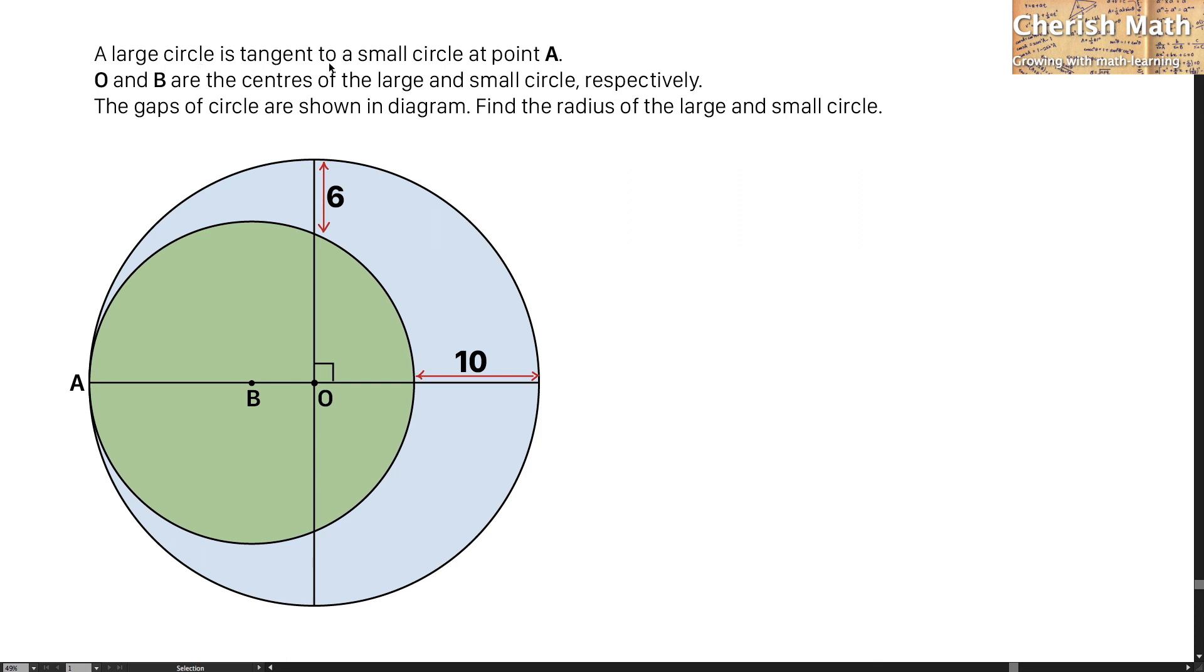A large circle is tangent to a small circle at point A. O and B are the centers of the large and small circle, respectively. The diagram shows the circles with given measurements. Find the radius of the large and small circle.